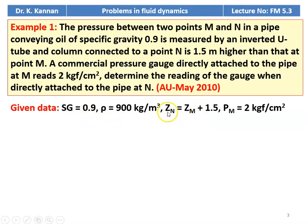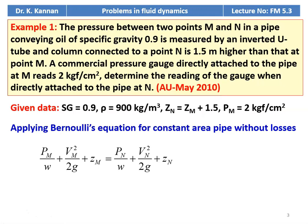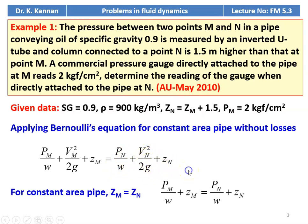Point N is 1.5 meter higher than point M, so ZN equals ZM plus 1.5. There is a pressure measuring device at point M indicating 2 kilogram force per centimeter square. Applying Bernoulli's equation between points M and N in the pipeline without losses: PM by W plus VM square by 2G plus ZM equals PN by W plus VN square by 2G plus ZN. For a constant area pipe, velocities are equal, so the equation simplifies to PM by W plus ZM equals PN by W plus ZN.